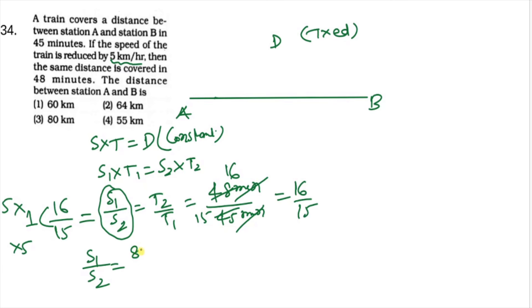Effectively, the speed ratio S1/S2 equals 16 × 5 = 80 km per hour, and 15 × 5 = 75 km per hour. So the original speed is 80 km per hour and the reduced speed is 75 km per hour.